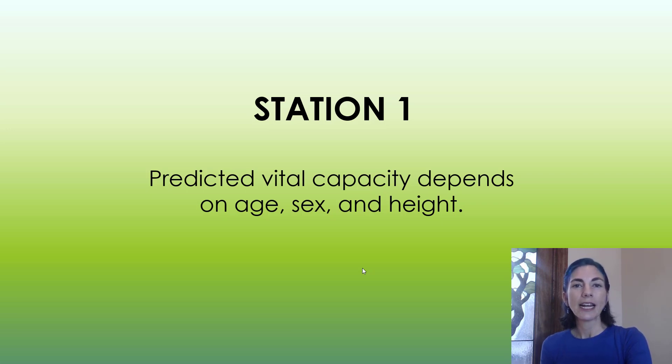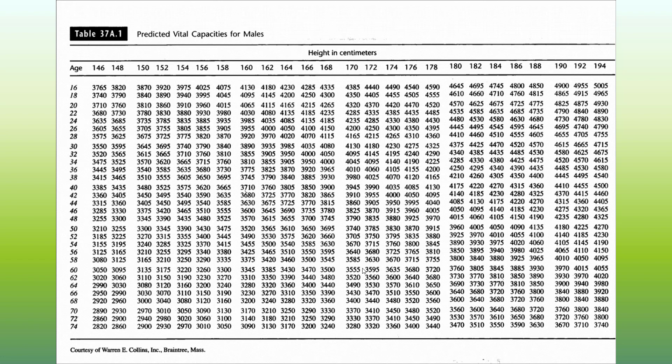The first station shows a table of vital capacity based on age, biological sex, and height, all of which impact your vital capacity. This chart shows vital capacity for males based on height and age. As you go up in height, you have a greater vital capacity. As you go up in age, your vital capacity starts to decrease a little bit.